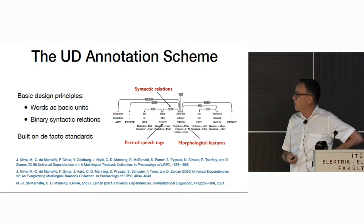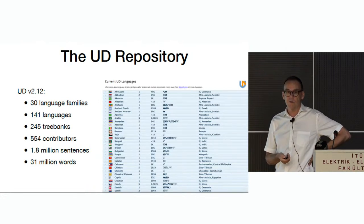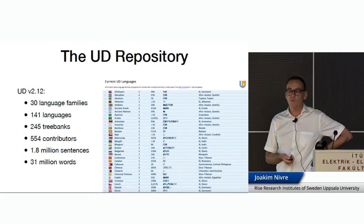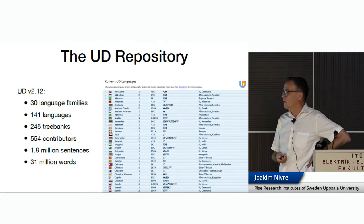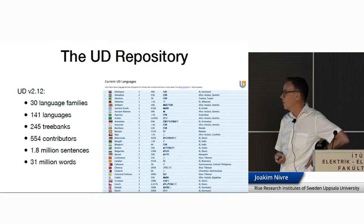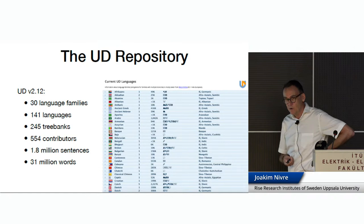The UD repository has grown in ways that none of us could imagine when we started. In the latest release, in May this year, we had data from 30 language families, 141 languages, and 245 treebanks, because many languages by now have more than one treebank. This has only been possible thanks to the amazing contributions by over 500 researchers around the world. Altogether, this now comprises almost 2 million sentences and over 30 million words.